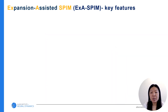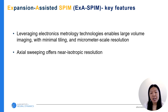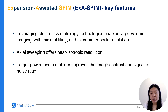The ExaSPIM system has three key features. First, leveraging electronics metrology technology enables larger volume imaging with minimum tiling and micrometer-scale resolution. Second, axial sweeping offers near isotropic resolution. Third, the high-power laser combiner improves image contrast and signal-to-noise ratio.